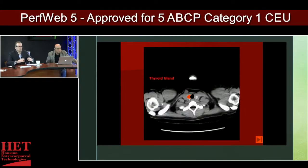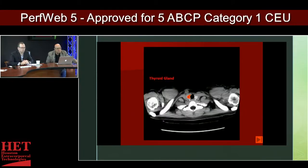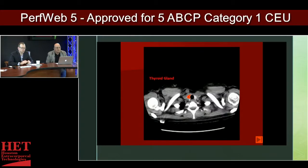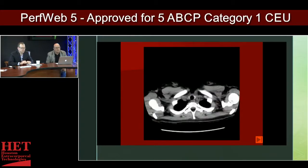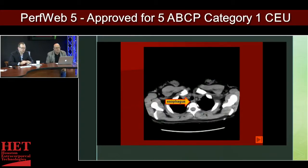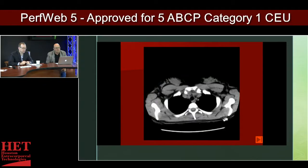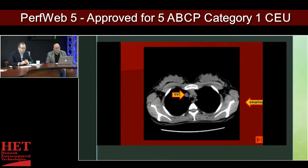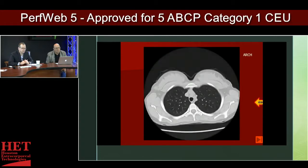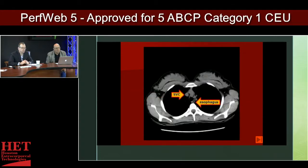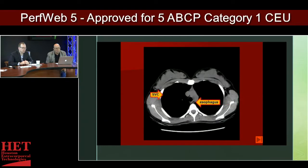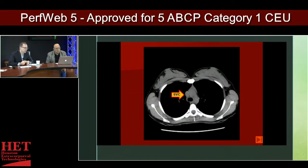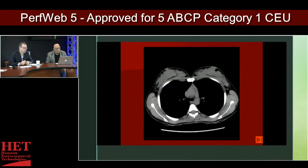This is just a short run-through where they point out different structures. Basically you're putting somebody flat on the table, running them through the CT scanner, and it cuts you up like a loaf of bread. So you're looking at axial views of the entire body, one image at a time, and based upon what you're looking for, the thickness of the slices can be different.